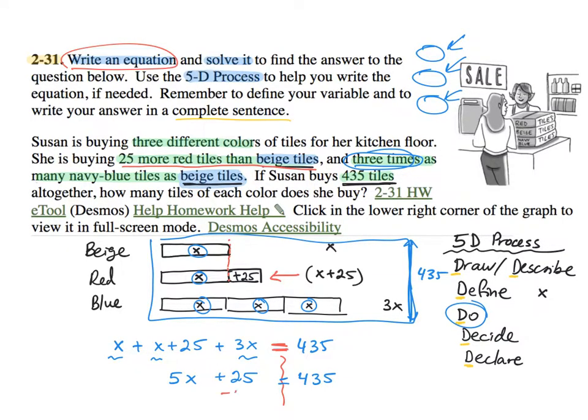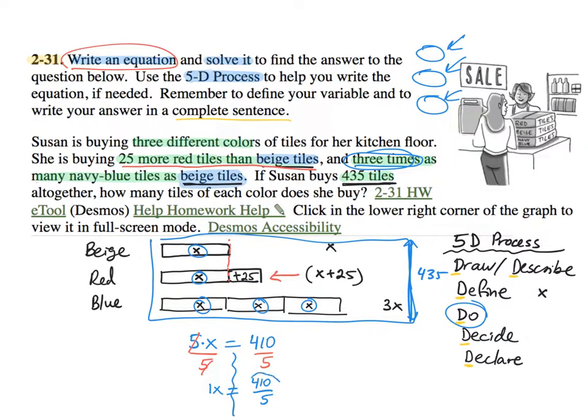So if you needed help, subtract 25 from both sides. So we want to isolate the variable X. So after doing that, I have five groups of X. I'm going to divide both sides by 5 to have one group of X. So one group of X or one tile of X equals 410 divided by 5. So go ahead and pause the video and divide. So we're going to find X like that.